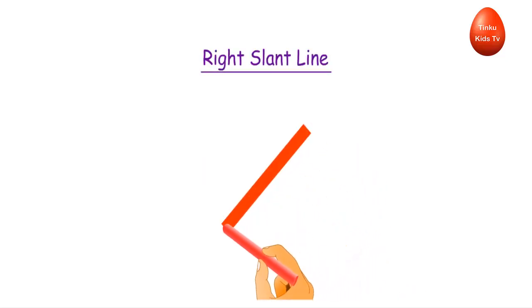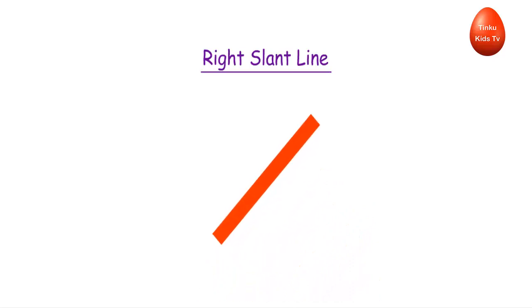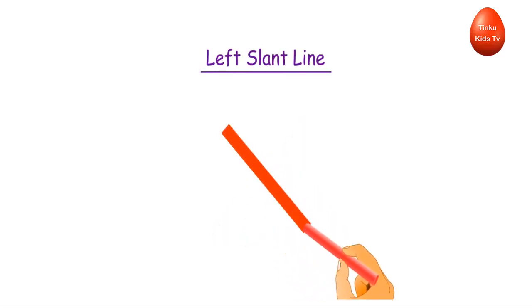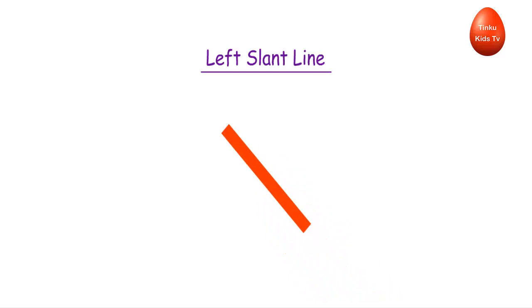Right slant line — this is a right slant line. Left slant line — this is a left slant line.